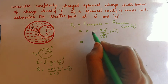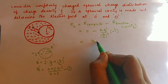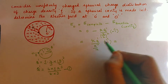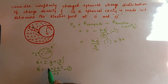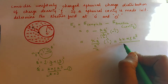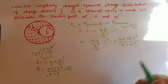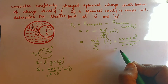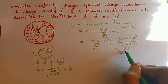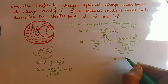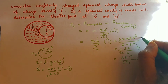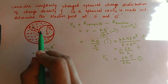The net field at O is 0 minus (−field from smaller sphere), which becomes + k q' / (r²/4) in the i-cap direction. Substituting q' and simplifying: k cancels with 1/4πε₀, pi cancels, and we get rho r³ / (6 ε₀ r²) = rho r / 6ε₀ in the i-cap direction. This is the electric field at point O.